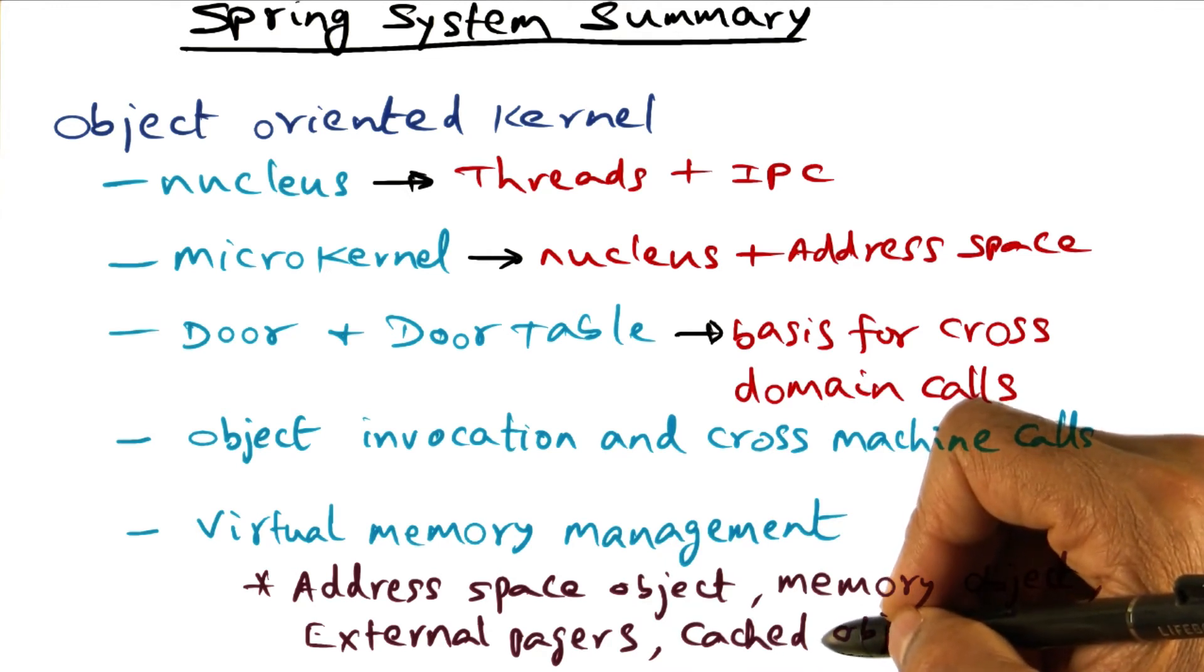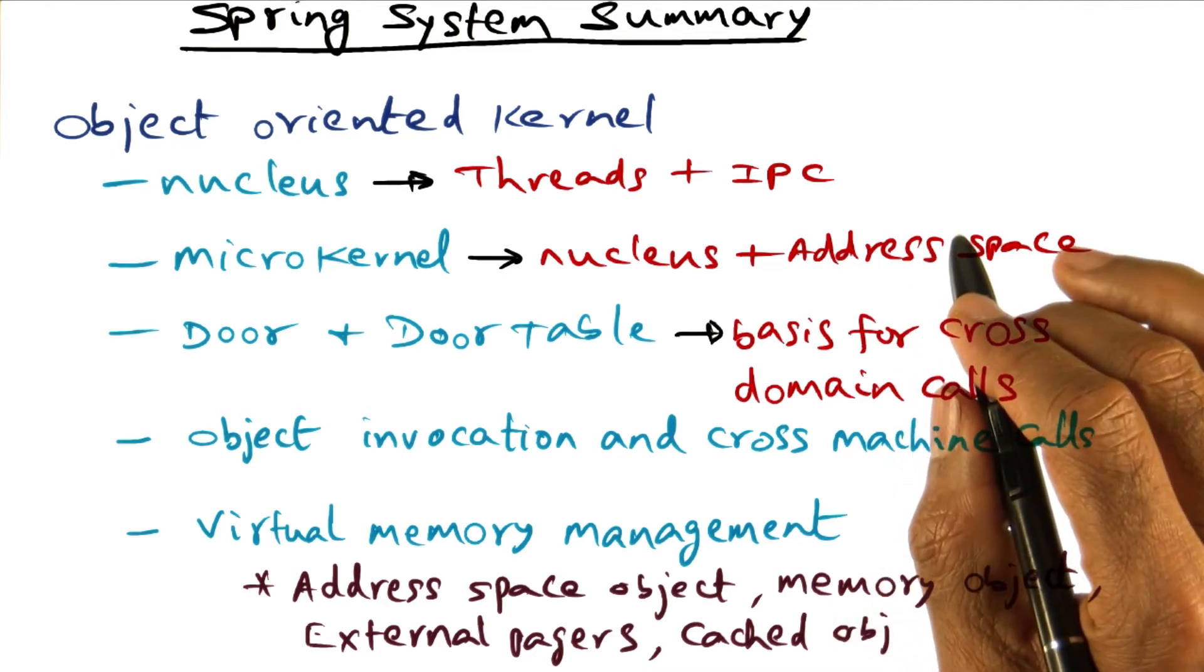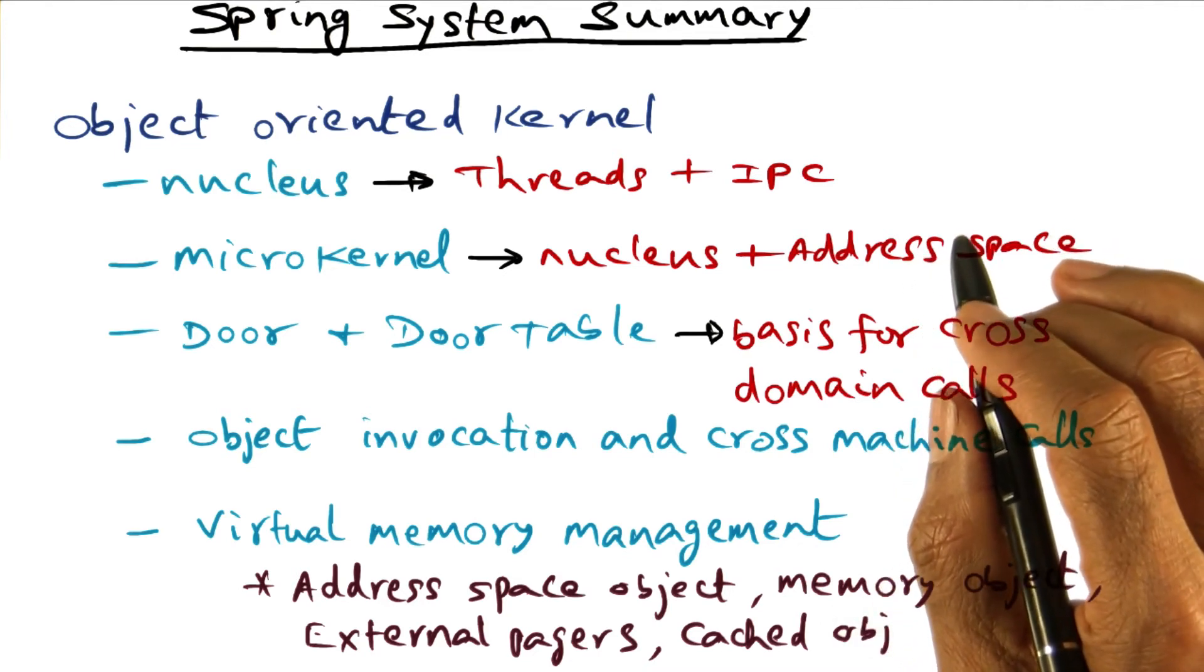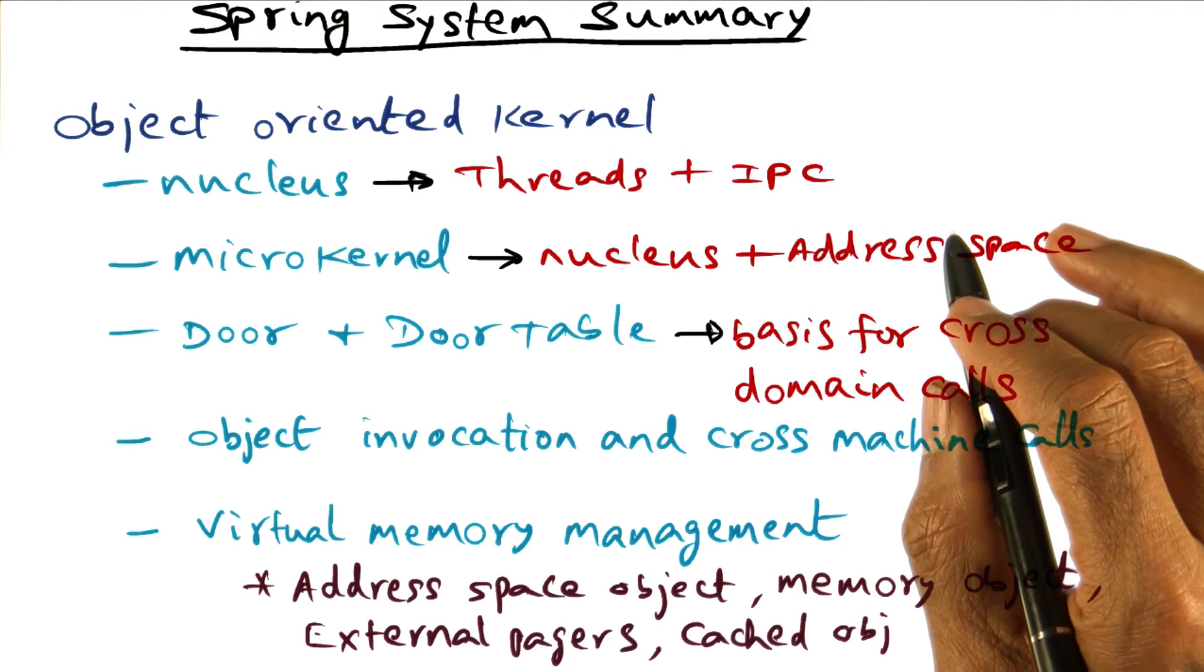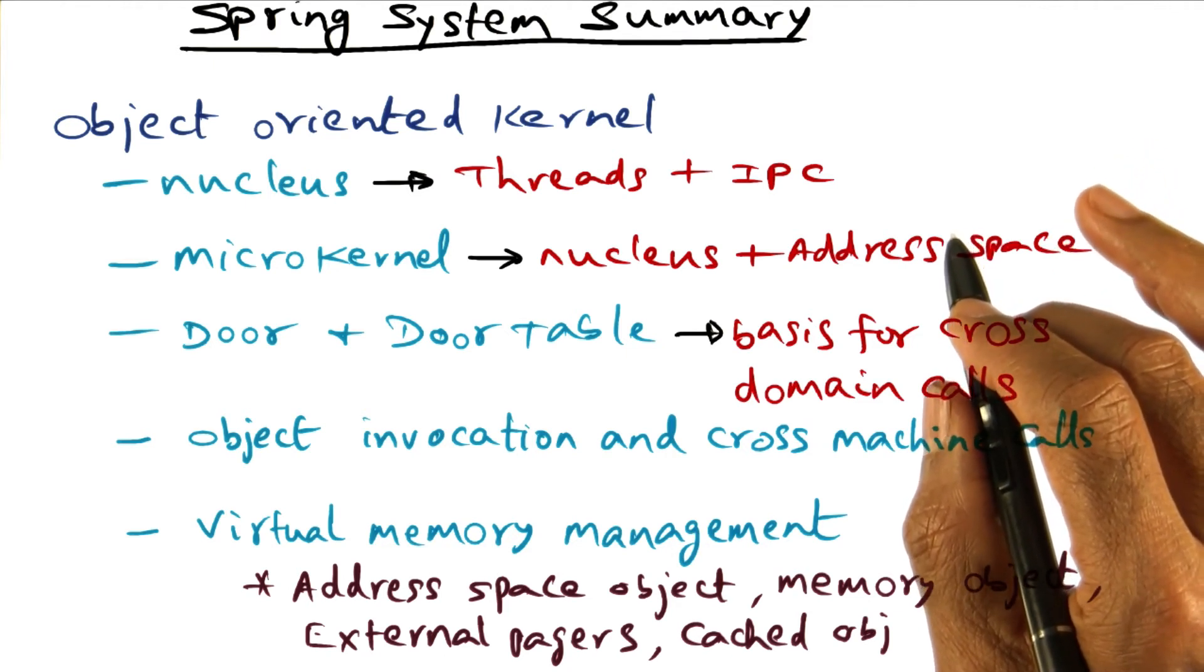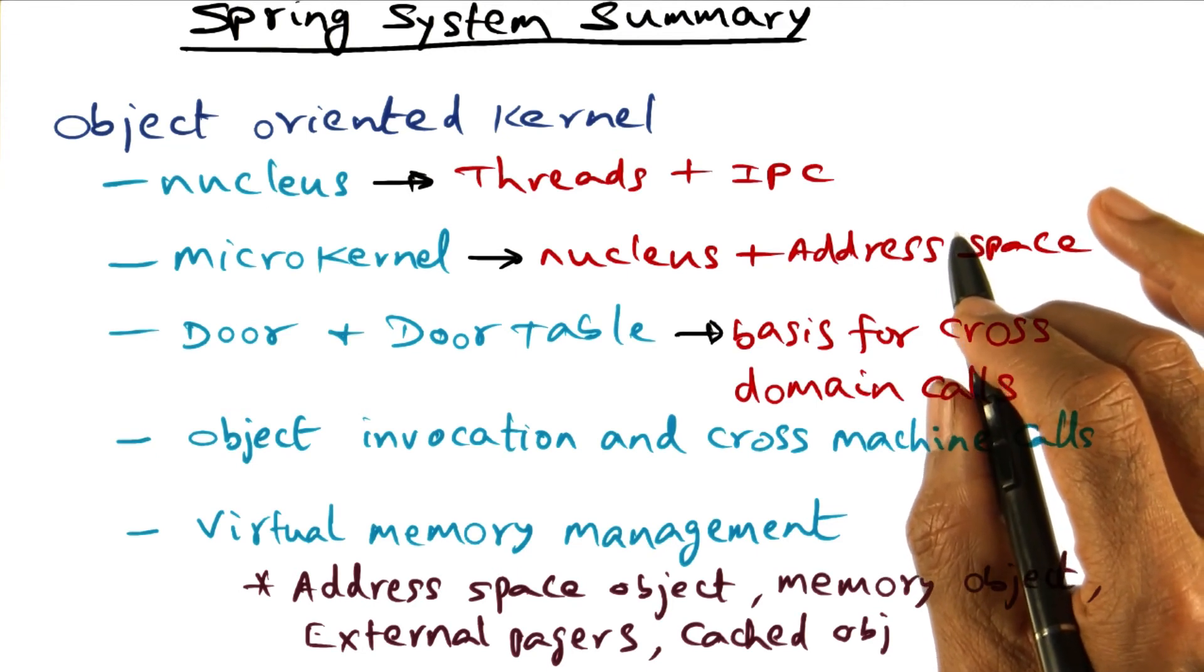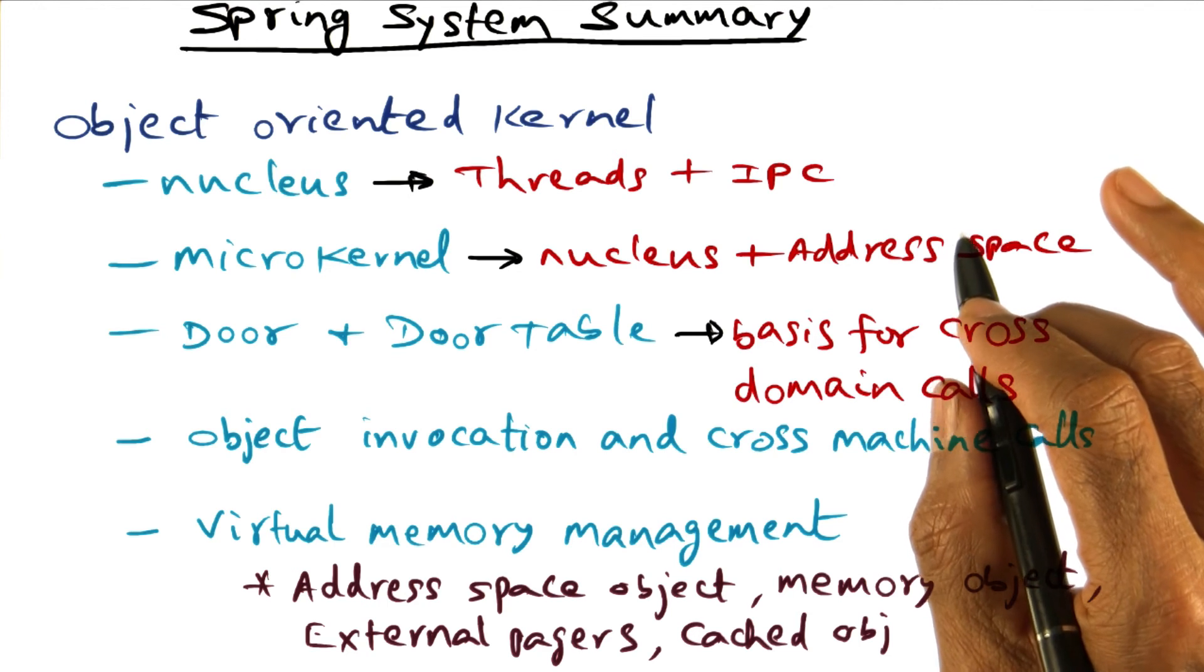Now to contrast this to Tornado, in Tornado also we saw that it was using object technology, but the contrast is pretty distinct. In Tornado, it uses clustered object as an optimization for implementing kernel services. For example, whether a particular object is a singleton representation, or it has multiple representation for each processor. Those are the kinds of optimizations that are being accomplished using the clustered object in the Tornado system.